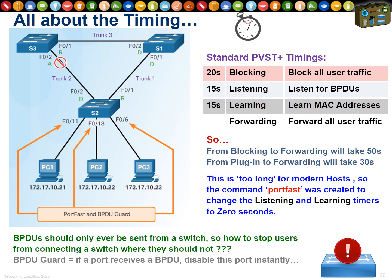BPDUs are sent out every port of every switch. If someone unplugs PC1 and PC2 and connects port 11 to port 18 with a patch cable, they create a loop that kills the whole network. BPDU Guard solves this: configure it on access ports (ports 11, 18, and 6) so that if a BPDU is ever received on those ports, they shut down immediately. Trunk links are meant to carry BPDUs; if a BPDU appears on an access port, it signals a loop or rogue switch — shut it down.